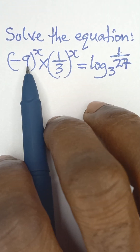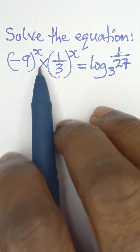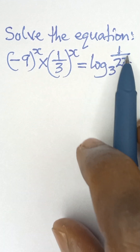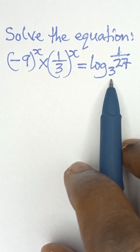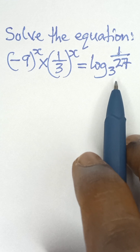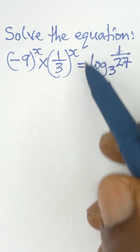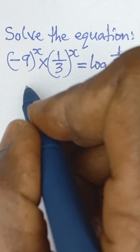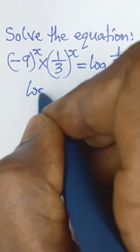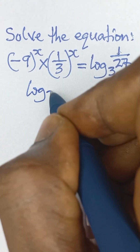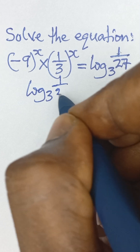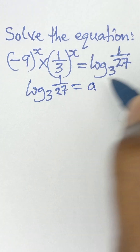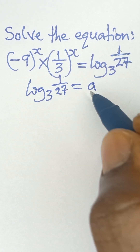Solve the equation: negative 9 raised to the power x, multiplied by 1 over 3 raised to the power x, equals log base 3 of 1 over 27. To solve this, let's first find the value of the right-hand side. So let's evaluate log base 3 of 1 over 27, and call that value a.